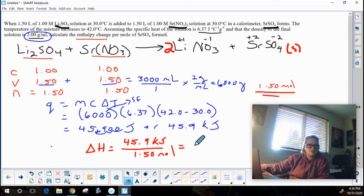And when I divide that out, I'll get 30.6 kilojoules per mole. And now when I calculate that, that's the heat gained by the solution.